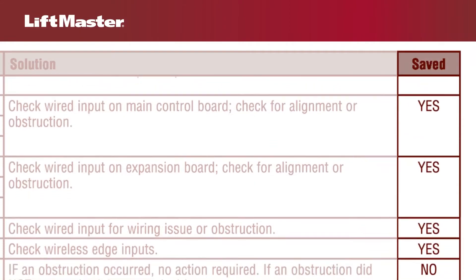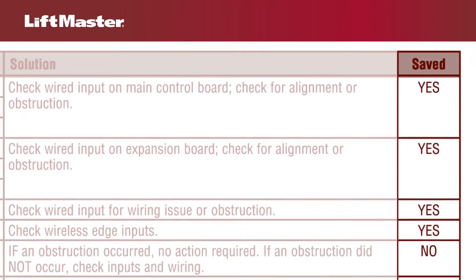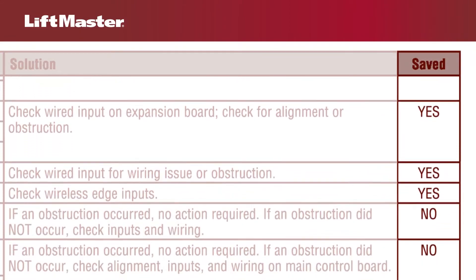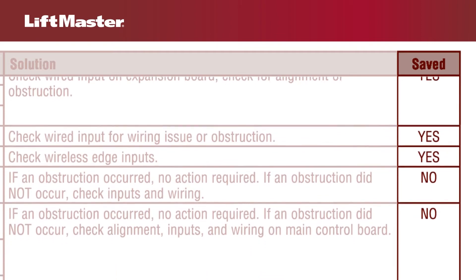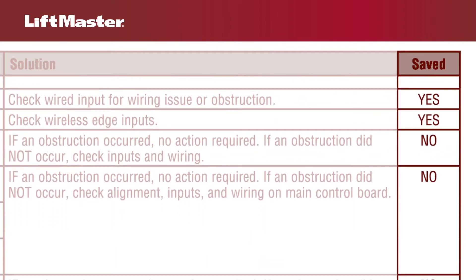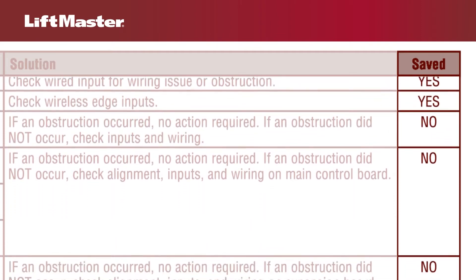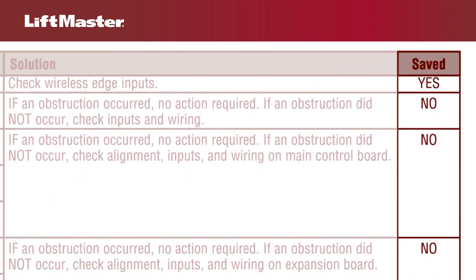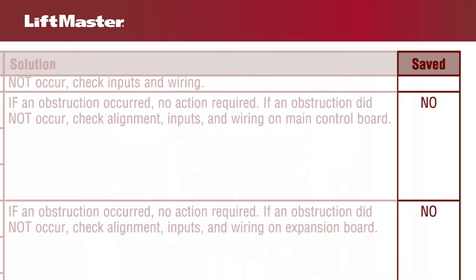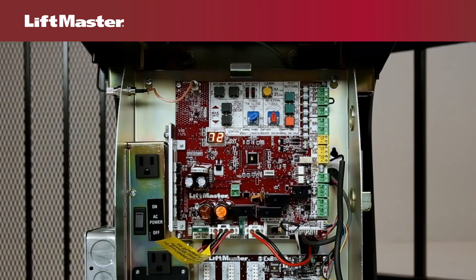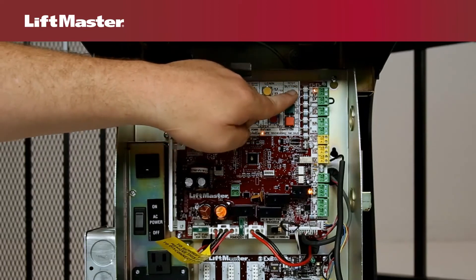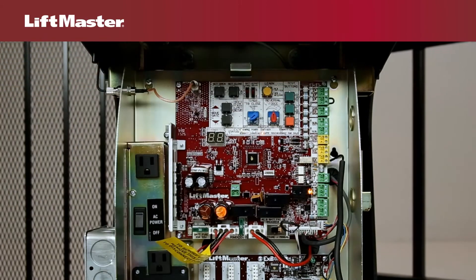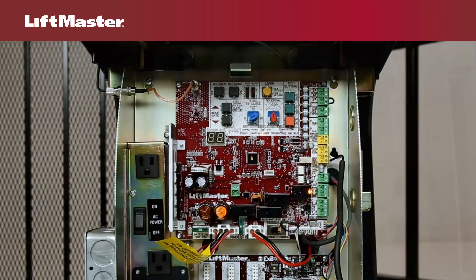Some codes are saved in the diagnostic code history and some are not. If a code is not saved, it will only appear on the display as long as the fault condition exists and then automatically clear. For example, code 72 can indicate an obstruction of the photo eye. This code is not saved when the fault condition is corrected.